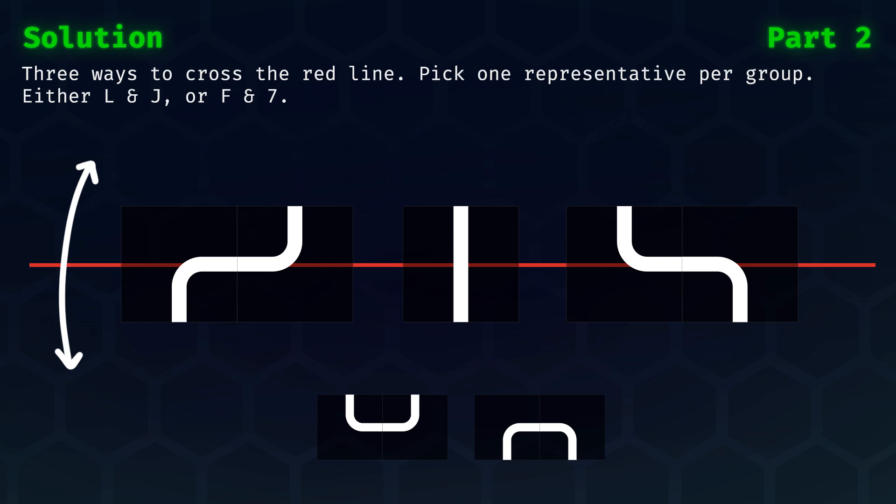So either we pick L and J to act as markers which indicate a crossing, or we pick F and 7. I'll also show this in the code, but the small loops at the bottom hopefully also help you think about why this is the case.